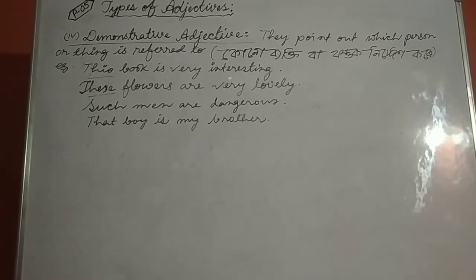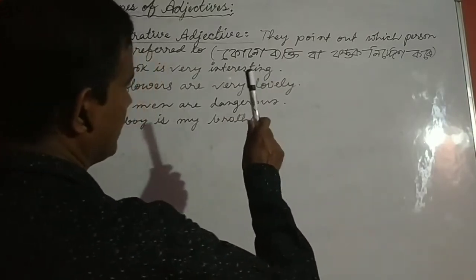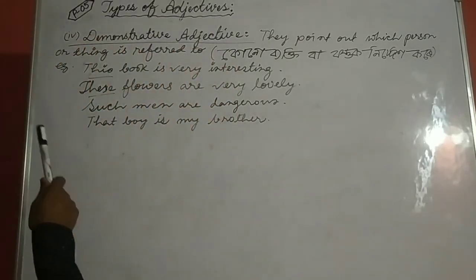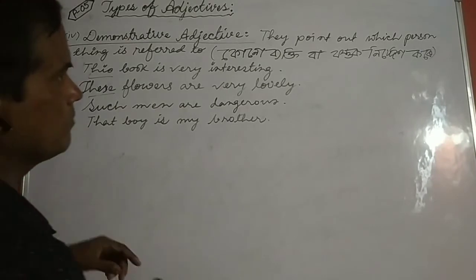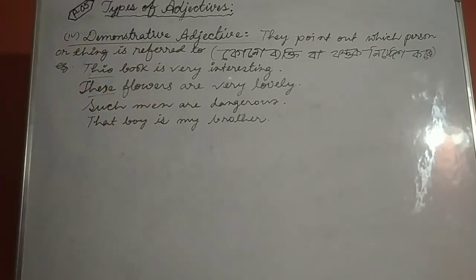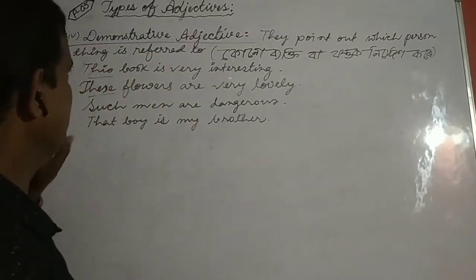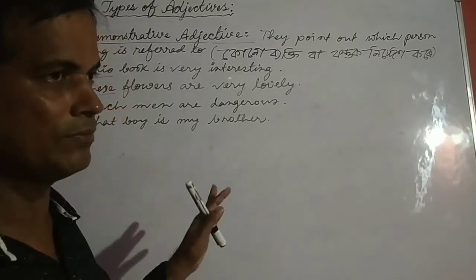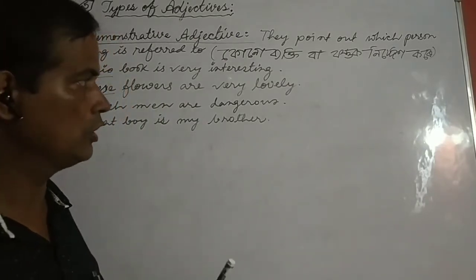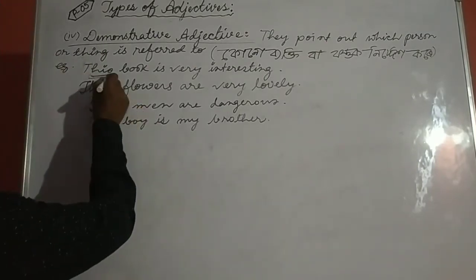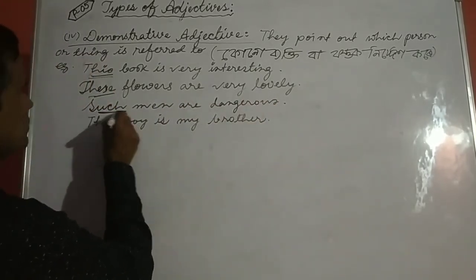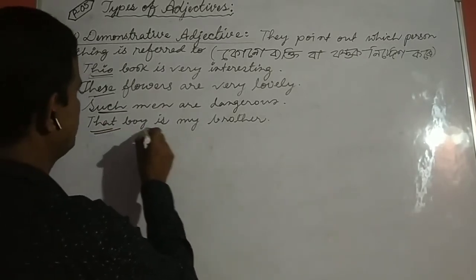What is demonstrative adjective? The adjectives which point out which person or thing is referred to. Examples of demonstrative adjectives: this, that, those, these. For example: this book is very interesting. These flowers are very lovely. Such men are dangerous. That boy is my brother.